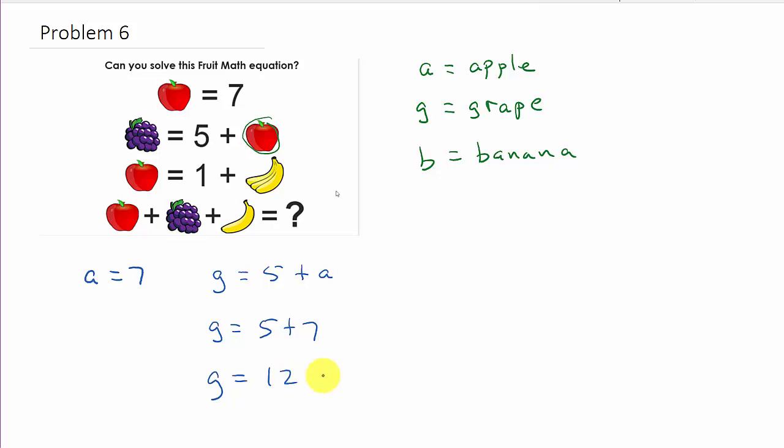Alright, alright. So now, let's look at the next line. See, right now we've got what the apple is, and we've got what the grapes are. Alright, so now, let's see, we've got what,